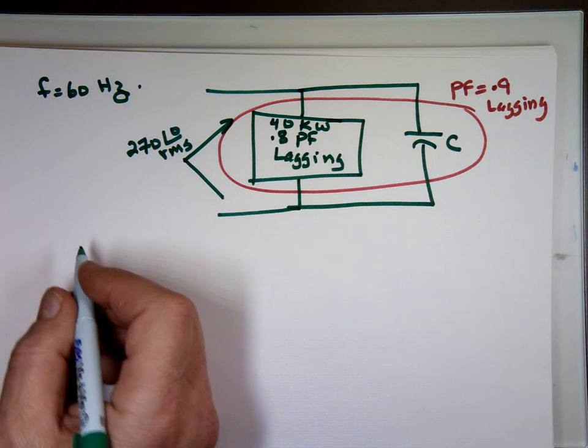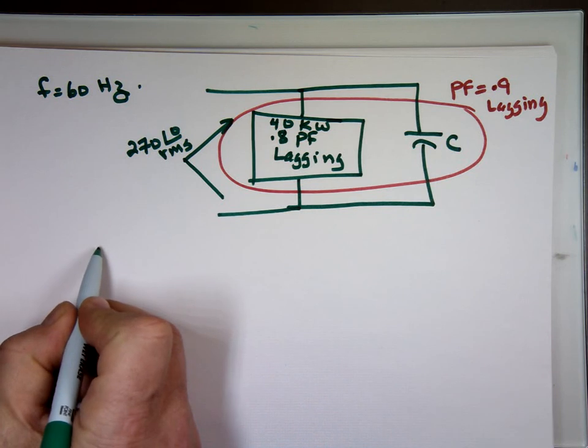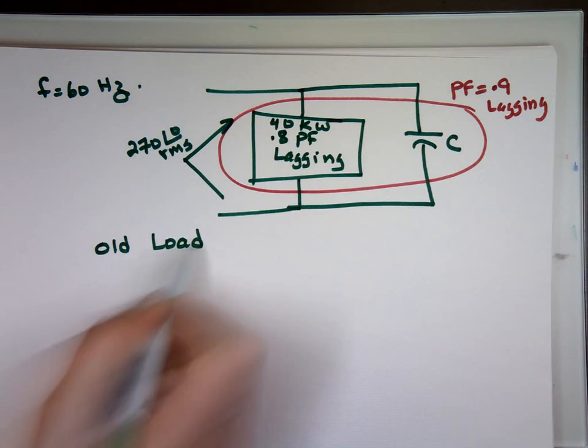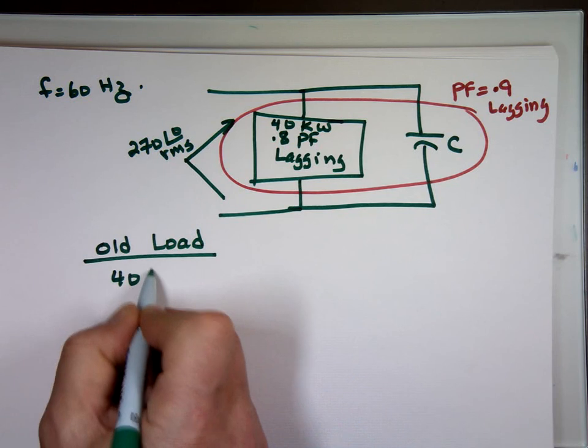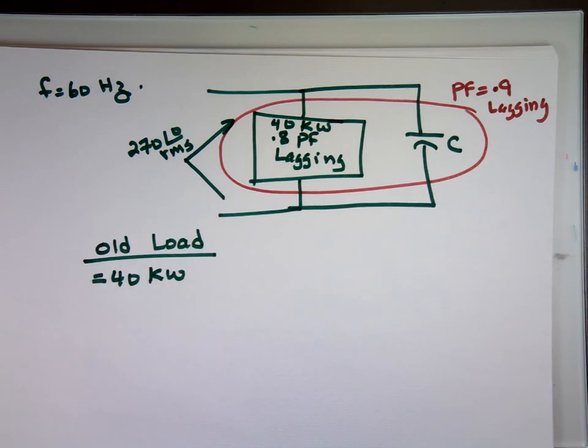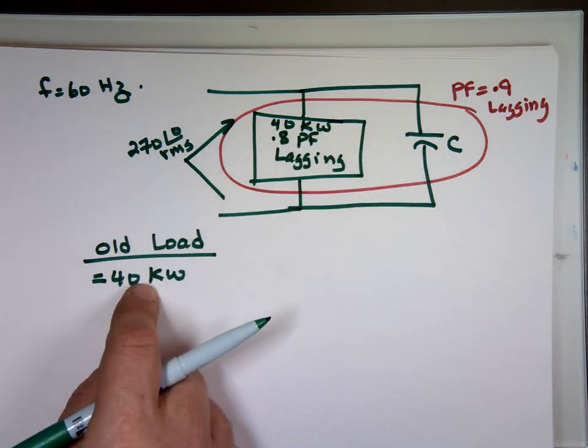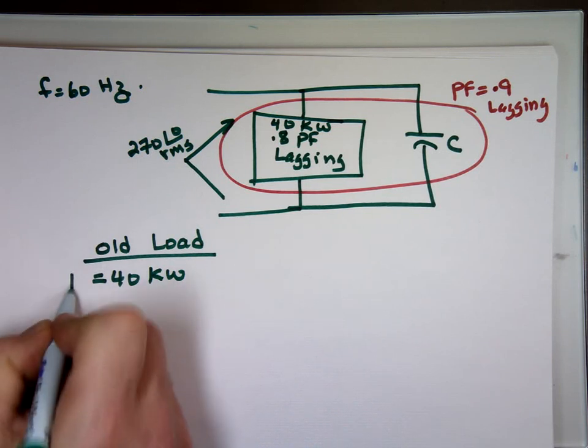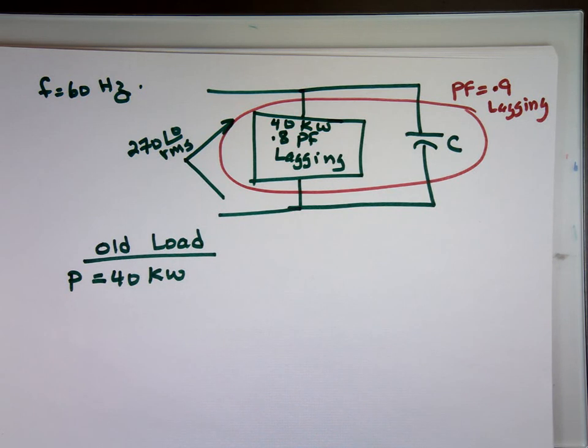So let's try to find the old one. The old load. What do we know about the old load? It has 40 kilowatts. Now that 40 kilowatts, is that Q? Is it P? Is it S? What is it? Is that the complex power? The real power? Or the Q value? That's the real power. Why is it the real? Kilowatts, exactly. Yep, that's the real power.